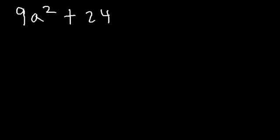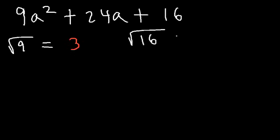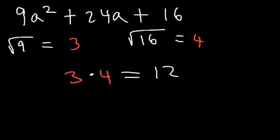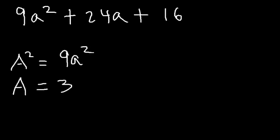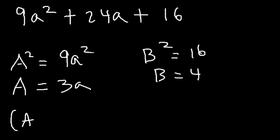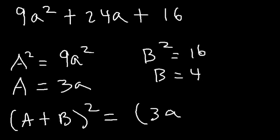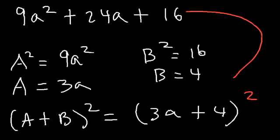Try 9a² + 24a + 16. Is it a perfect square trinomial? The square root of 9 is 3 and the square root of 16 is 4; 3 × 4 = 12, which is half of 24 — so yes, it is. Here a² = 9a² so a = 3a, and b = 4. Using the form (a + b)², the answer is (3a + 4)².